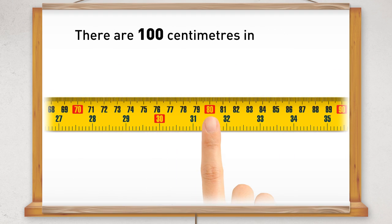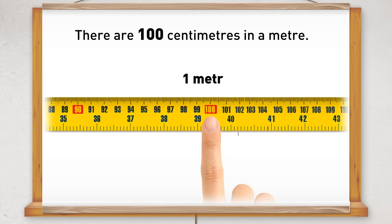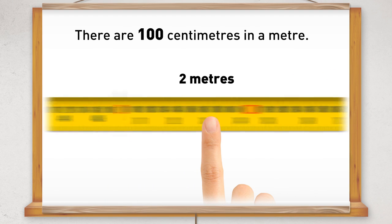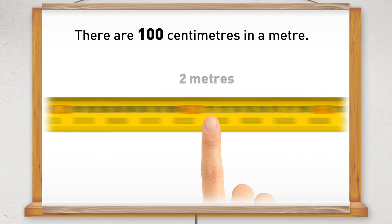There are 100 centimeters in a meter. So on this tape measure here is 1 meter. Here is 2 meters. And here is 3 meters.